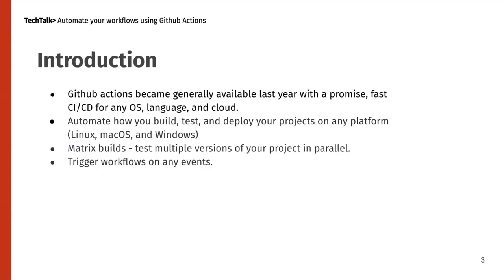For example, you can define a matrix with different operating systems like Linux, macOS, or Windows, or all together, and your tests or workflow will run in parallel on all those operating systems. You can also trigger these workflows on any event — GitHub has events like push when someone pushes code to a branch, or when someone creates a pull request. You can specify when this workflow should get triggered and start running.